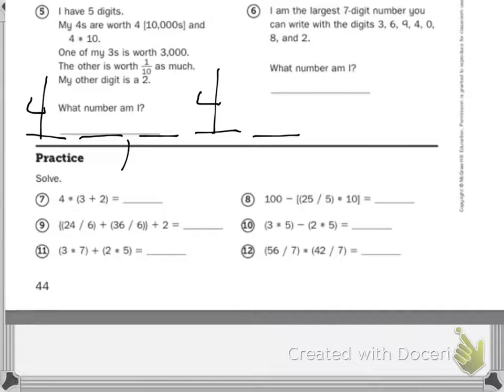Second from the right. One of my threes is worth 3,000. So it's the number right before the comma. The other is worth one-tenth. Cross off a zero. So it's worth 300. And then a two. So your answer to number five is 43,342.